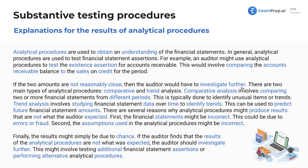There are two main types of procedures: comparative analysis and trend analysis. Comparative analysis involves comparing two or more financial statements from different periods, typically to identify unusual items or trends. Trend analysis involves studying financial statement data over time to identify trends. For example, if you're auditing for five years and every year revenues go up by five percent, you keep that in your permanent file. When you return to the current year audit and see revenue went down by ten percent, that's not consistent with the trends you've seen — investigate that.